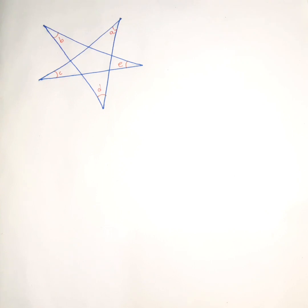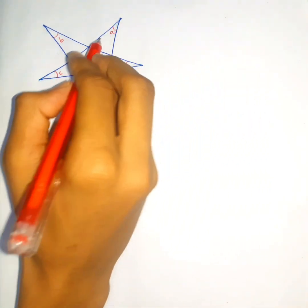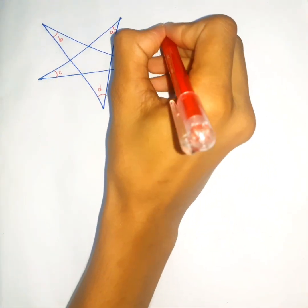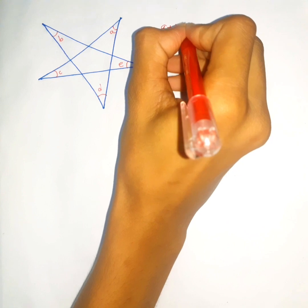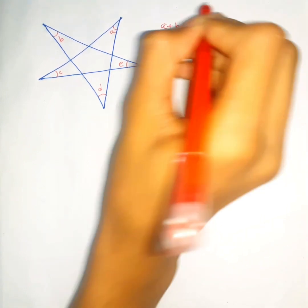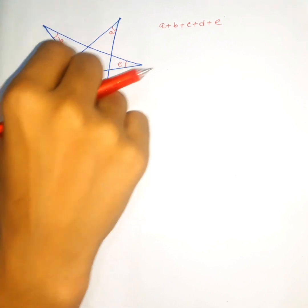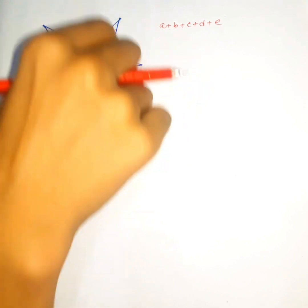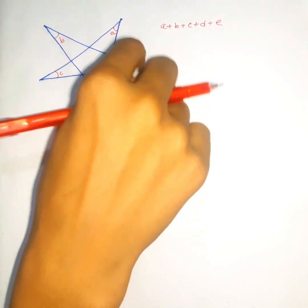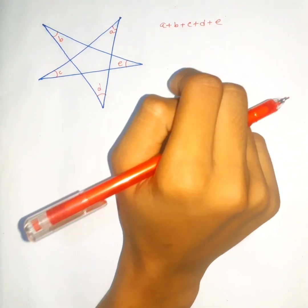As my video thumbnail shows, we're going to find the value of a plus b plus c plus d plus e — the five angles of the star.